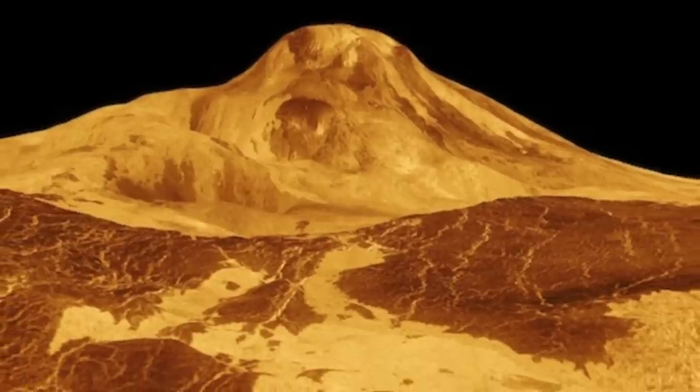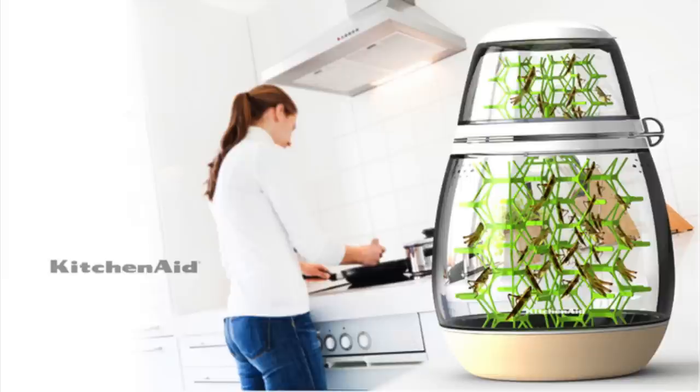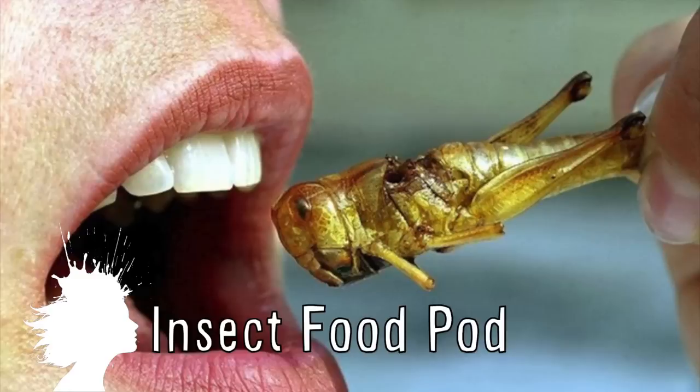On the snow-capped mountains of Venus there's no actual snow as we know it because it snows metal. And the Lepsis is a designer kitchen pod concept to grow your own insects to eat. Vsauce! Kevin here. This is Mindblow.